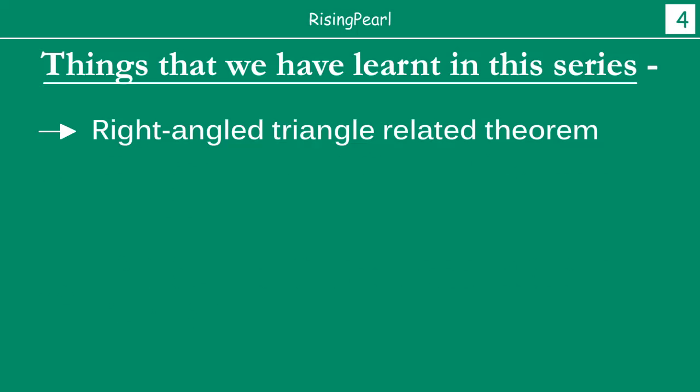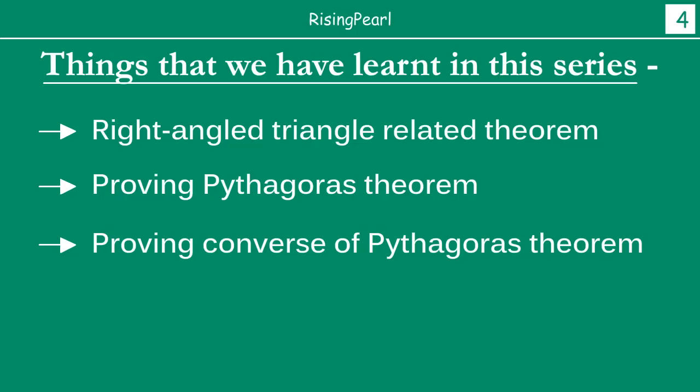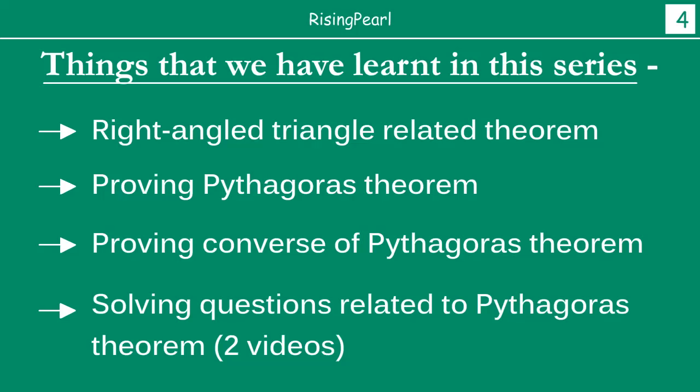And finally, we started taking a look at right angle triangle related theorems. There is a special theorem that we looked at here, and we talked about how we can prove Pythagoras' theorem. Pythagoras' theorem is something we have learnt in our earlier grades — that in a right angle triangle, hypotenuse squared is equal to the sum of squares of the other two sides. In this particular webisode, we looked at how we actually prove Pythagoras' theorem, and we subsequently followed up by proving the converse of Pythagoras' theorem. Finally, we looked at solving questions that may relate to Pythagoras' theorem.